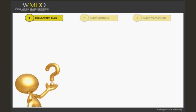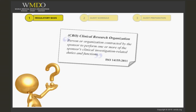To begin, let's review what it means to be a sponsor or a clinical research organization. As defined by the International Standard ISO 14155, version 2011, a clinical research organization is a person or organization contracted by the sponsor to perform one or more of the sponsor's clinical investigation-related duties and functions. This is commonly known as sponsor's outsourcing of duties and functions.